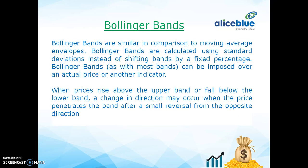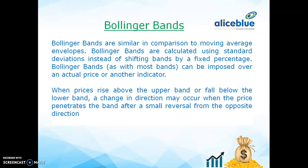Bollinger Bands are similar in comparison to moving average and envelopes. Bollinger Bands are calculated using standard deviations instead of shifting bands by a fixed percentage. With most bands, they can be imposed over an actual price or another indicator. When price rises above the upper band or falls below the lower band, a signal may occur when the price penetrates the band after a small reversal from the opposite direction.